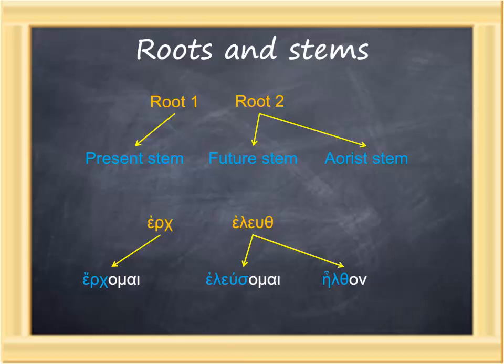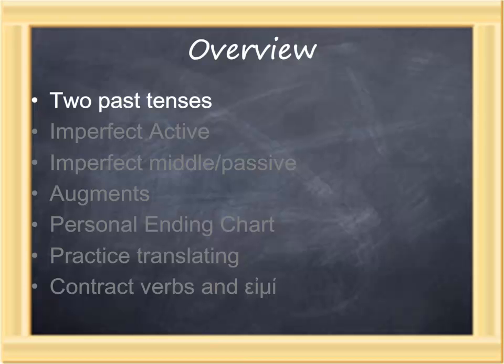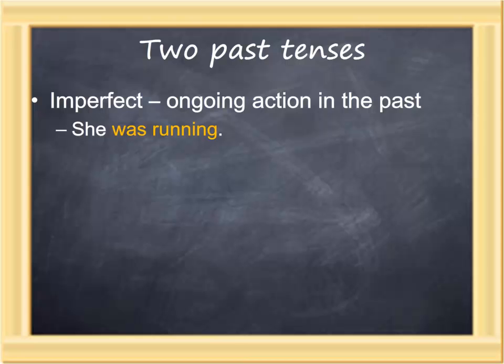With this simple review of the present and futures learned in the previous semester, we now turn our attention to what English calls past time. But we'll note that Greek is more concerned with type of action, so there are two past tenses in Greek. The imperfect tense describes ongoing action—a type of action that happens to take place in the past, such as 'she was running.' The present is ongoing action in the present; the imperfect, ongoing action in the past. In both cases, it's the type of action that's most critical.